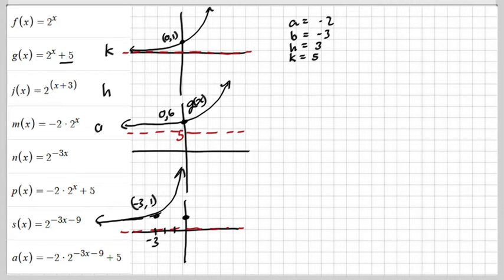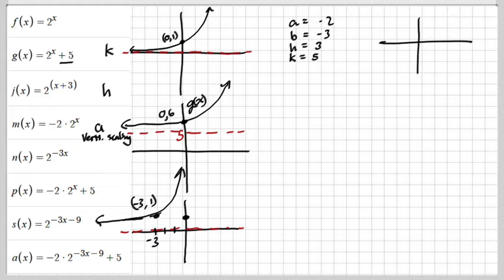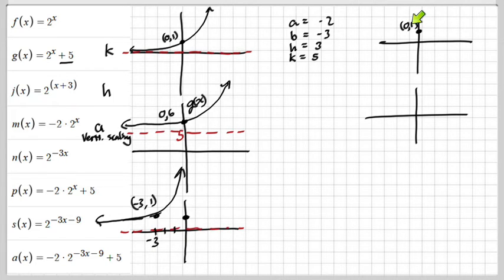The next one is A. When A is negative 2, that is going to stretch or shrink the function vertically — it does a vertical scale. So let's do two graphs: what happens when it's just a 2, and what happens with the negative. When it's just a 2, it takes that point (0, 1) and since it's a vertical scale, we scale the y-value. The y-value times positive 2 makes this into (0, 2), so we move it up to there.